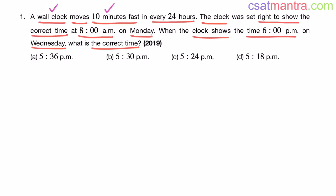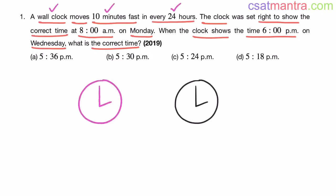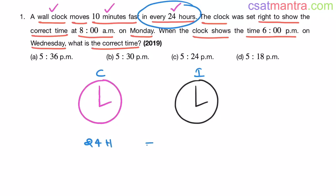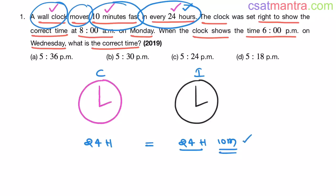A wall clock moves 10 minutes fast in every 24 hours. We have two clocks — the clock which shows the corrected time, I am naming it as the correct clock, and the clock which shows incorrect time, I am naming it as the incorrect clock. In every 24 hours, 24 hours duration on the correct clock is equal to 24 hours 10 minutes on the incorrect clock. If it is 10 minutes slower, I would be having 23 hours 50 minutes.